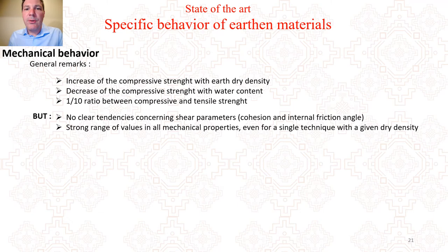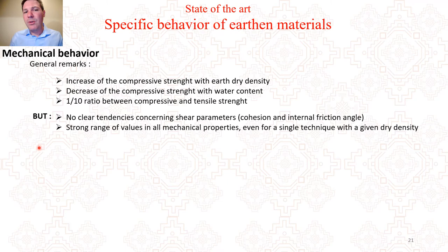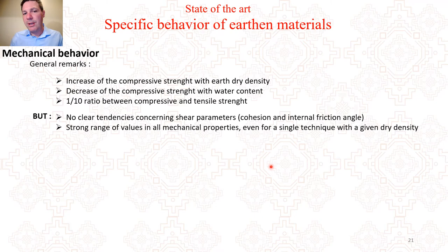Looking at mechanical behaviour, whatever the earth construction technique, there seems to be a tendency of increasing compressive strength with dry density, decreasing compressive strength with water content, and a ratio of about 1 to 10 between compressive and tensile strength. However, we do not find clear tendencies concerning the shear parameters — cohesion and friction angles. Another big problem is that for a single technique with a given dry density, if compressive tests are made in several laboratories, we can have very different results.